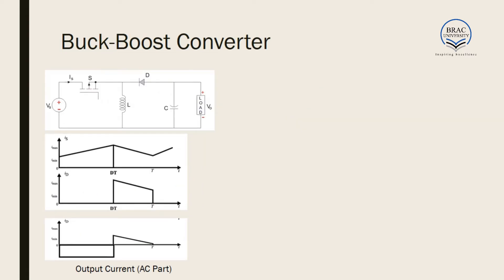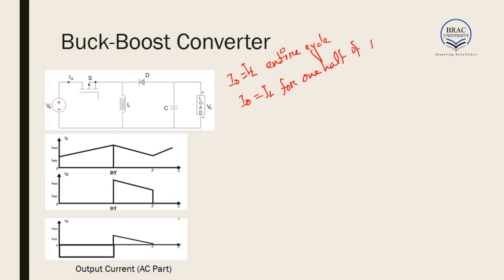Once we have learned the calculations for buck and boost, every other converter becomes straightforward. If I_output equals I_L for the entire cycle, the converter follows the buck process. If I_output equals I_L for only one half of the cycle, the converter follows the boost process.